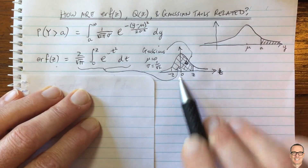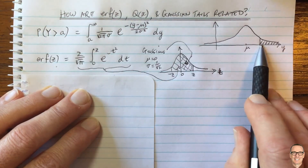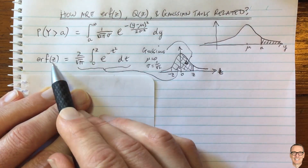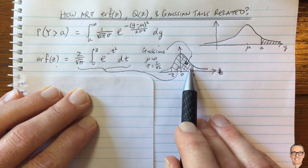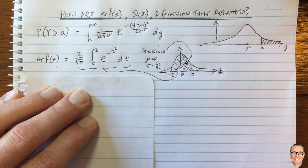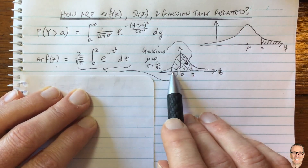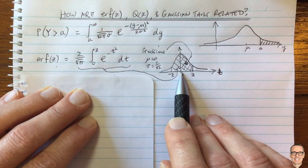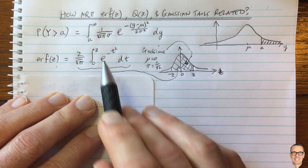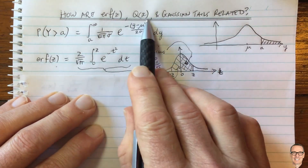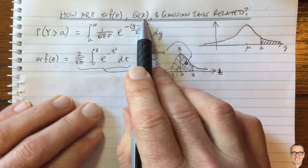So how do these two things relate to each other? Clearly, the error function is between two values, and the Gaussian tail is the bigger-than probability. Sometimes you need the error function — for example, if you want to know whether a yearly salary is within a certain range of the mean, then you'd directly use the error function. So let's also introduce the Q function and then we'll see how they all relate to each other.